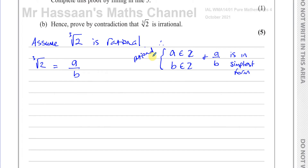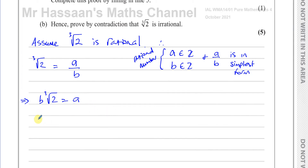If we can show that this assumption is contradicted, then we've proved that the cube root of two is not rational and must be irrational — because we're going to show that this leads to something that doesn't make sense. Let's multiply both sides by b: we get b times the cube root of two equals a. Now let's cube both sides — you get b cubed times two equals a cubed. So we can say therefore a cubed equals 2b cubed.